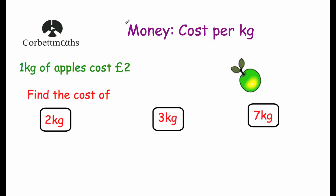Welcome to this corporate maths video on money. In this video we're going to focus on questions which involve the cost per kilogram. So if we're going into a shop buying fruit or vegetables, sometimes we're told the cost of one kilogram of something. For example, we're told that one kilogram of apples costs two pounds, and we might be asked to find the cost of two, three, or seven kilograms of apples.